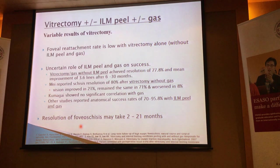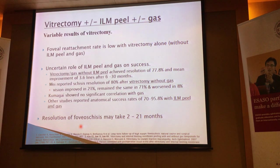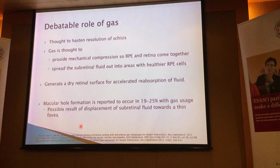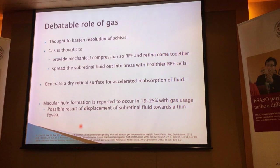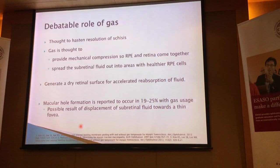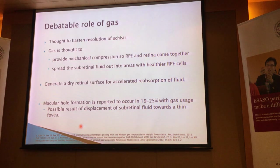The problem also is that a lot of foveal schisis actually resolves on its own — it can be two months, it can be two years. So it's very hard sometimes after doing a vitrectomy to ascertain whether or not it was the vitrectomy that did the job or whether it was just spontaneous resolution. The data is not clear on this. What is the role of gas in a case like this? The honest answer is we don't know. It is thought to be able to aid in the resolution of this schisis. Gas is able to perhaps provide mechanical compression between the two layers so they come together. It also perhaps spreads out the subretinal fluid over a larger area so that the healthy RPE can pump out the fluid, or it may create a drier retinal surface and accelerate absorption of fluid through the vitreous cavity.